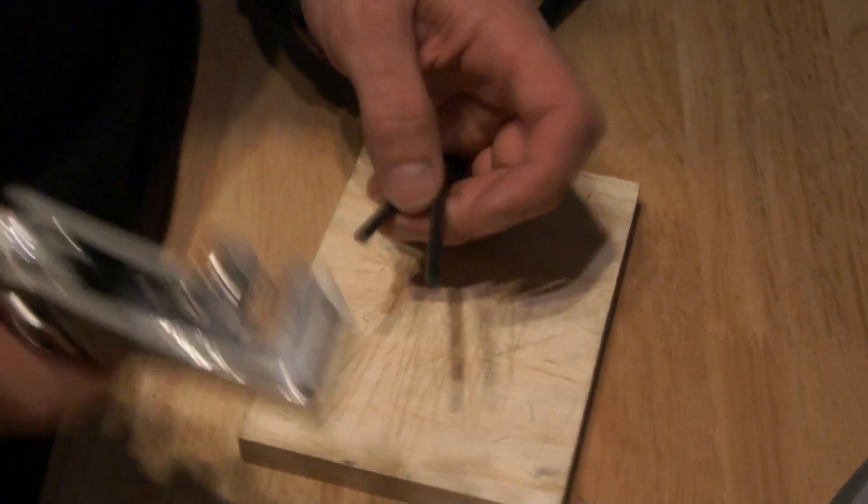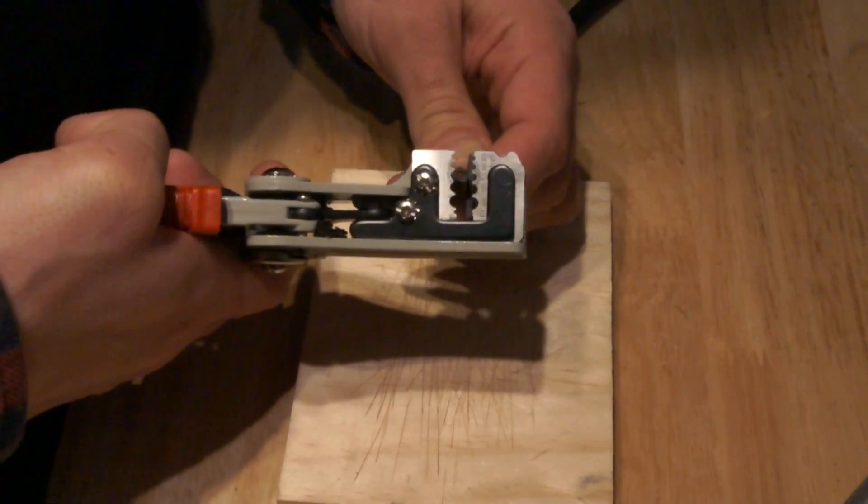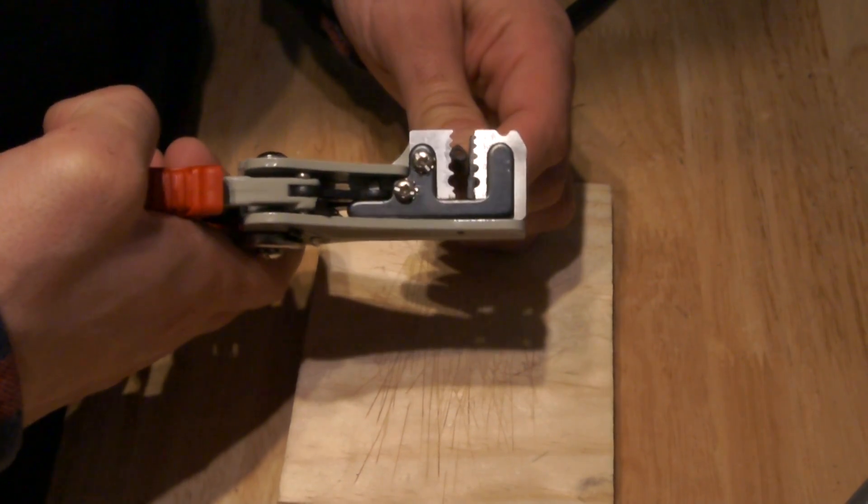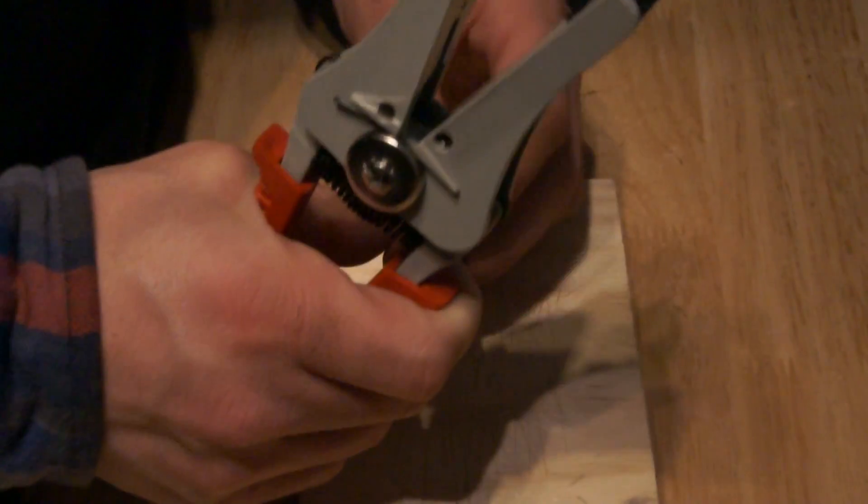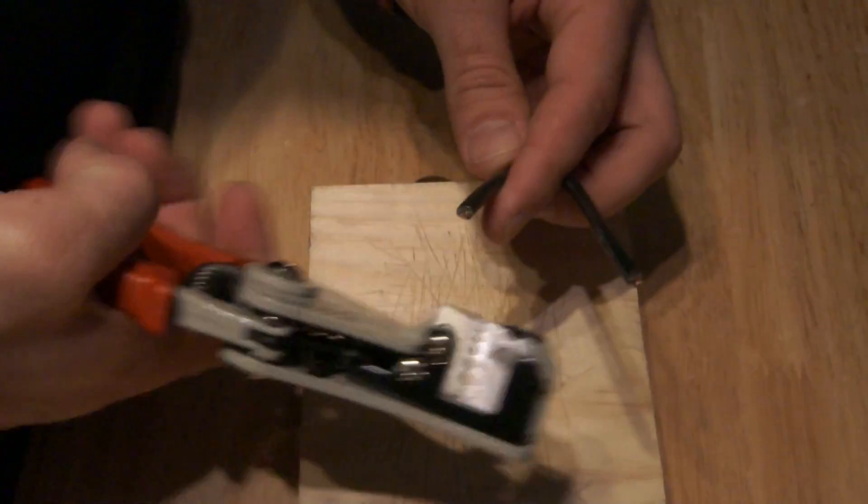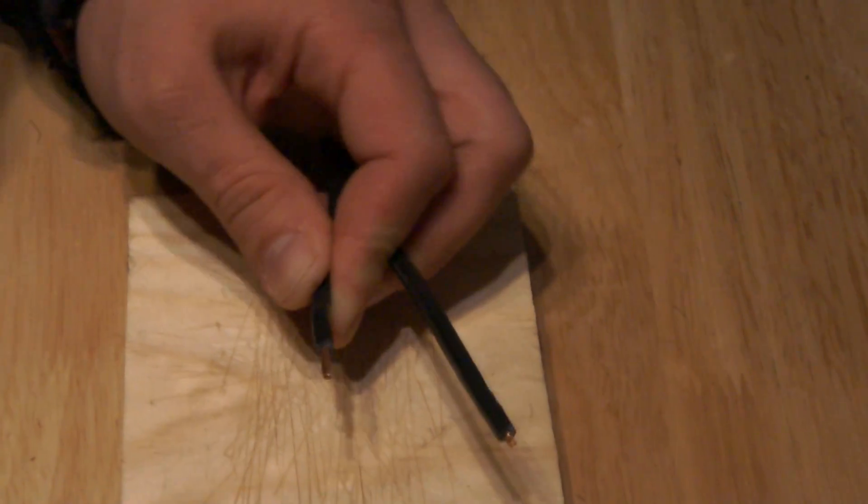Now on the negative wire, we need to strip about an eighth of an inch. And on the positive wire, about a quarter of an inch to a half inch.